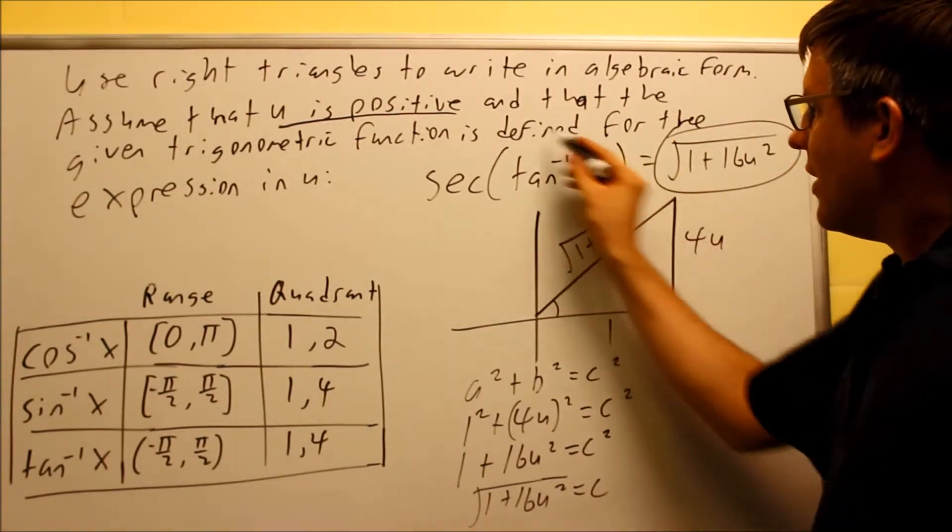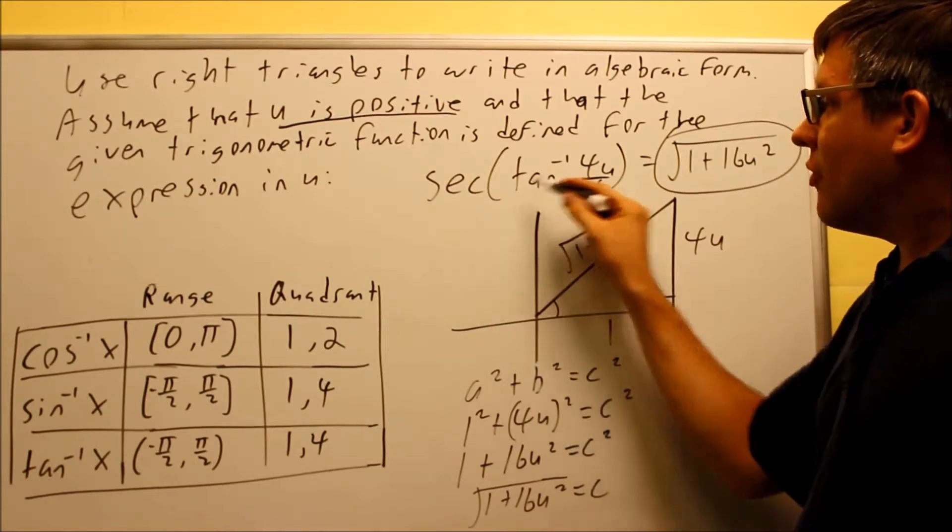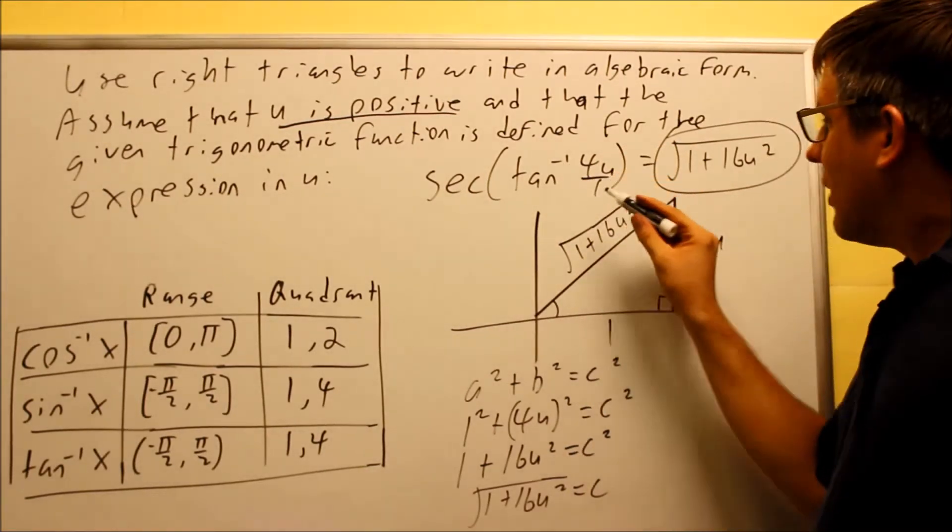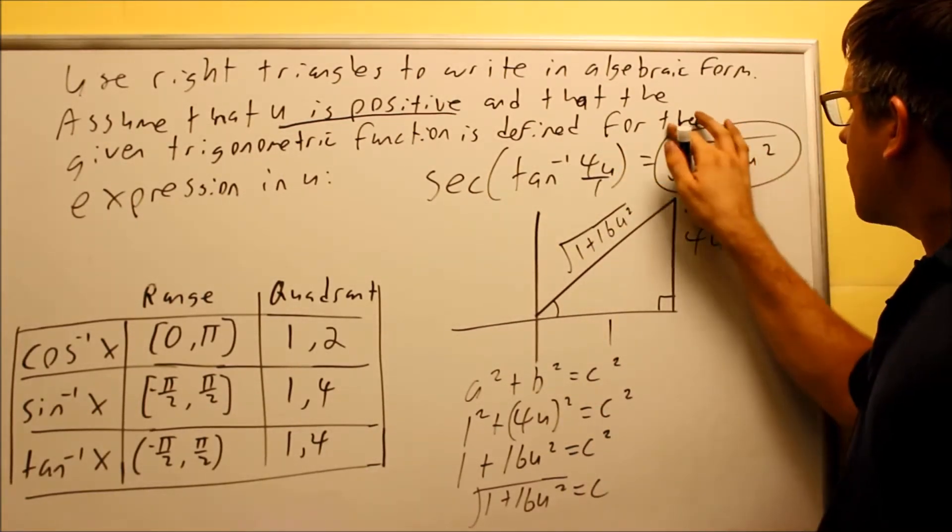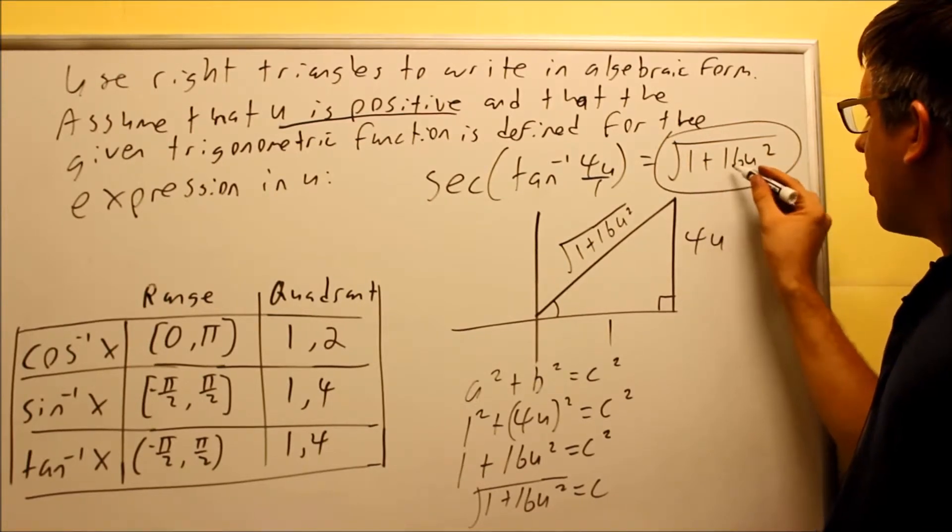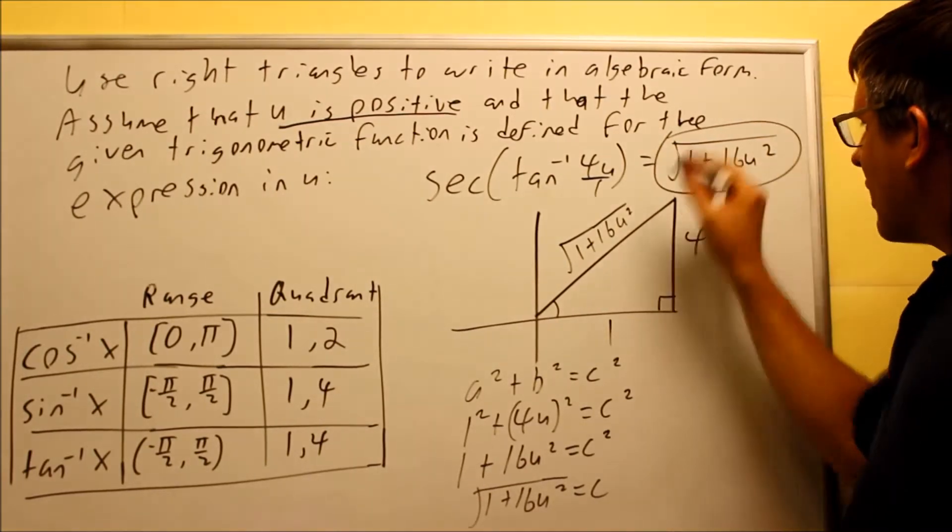So basically we can say that this whole thing here, secant of inverse tan of 4U, that whole thing is equal to this square root, square root of 1 plus 16U squared. And this is, again, something that you would do more with in calculus.